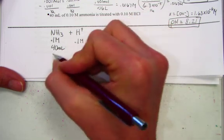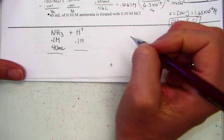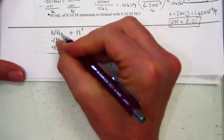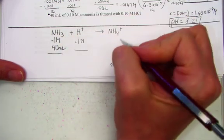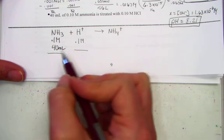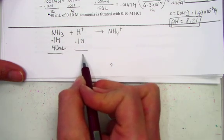I know at the equivalence point we have an equal number of acid moles as base moles. And on the product side, we are forming the conjugate acid of ammonia called ammonium. The very meaning of equivalence point means equal number of moles of base as equal number of moles of acid.